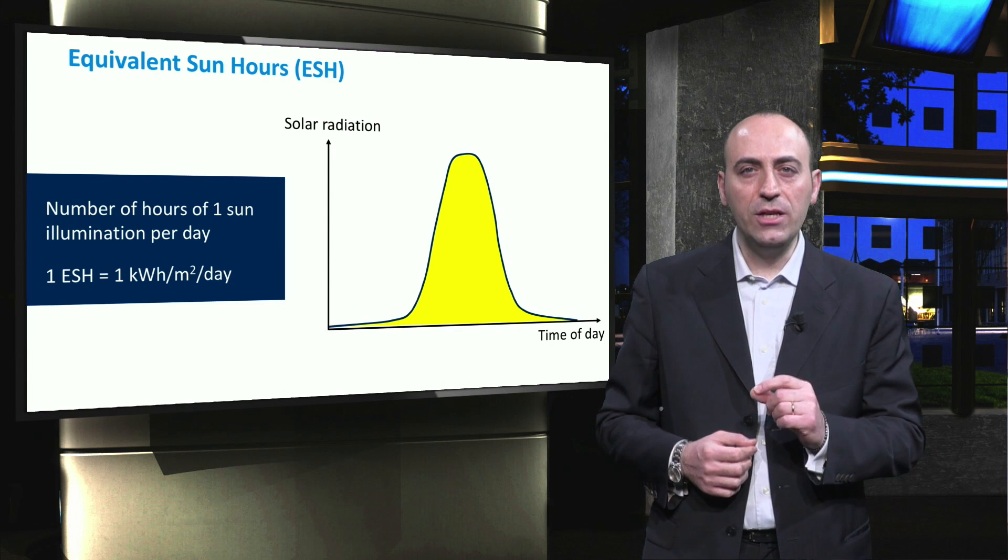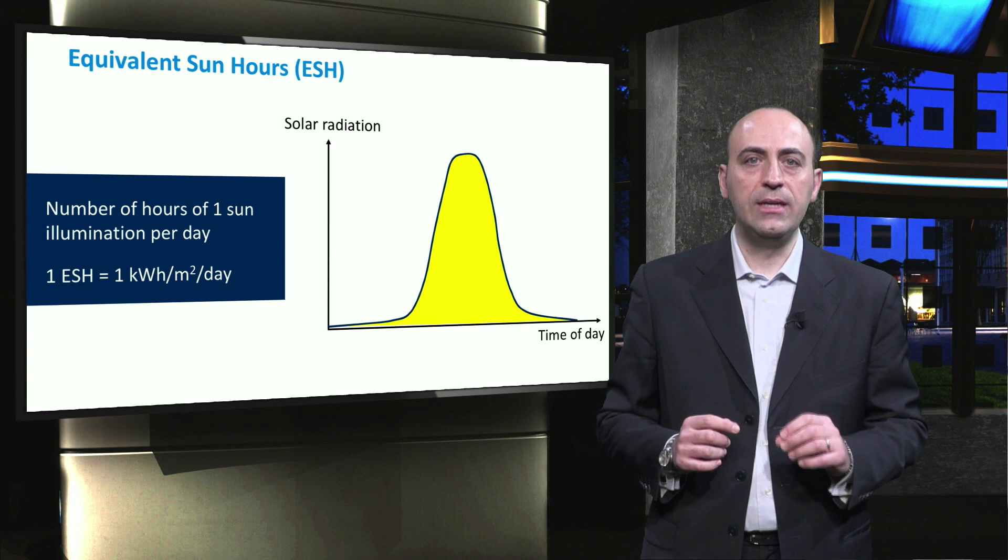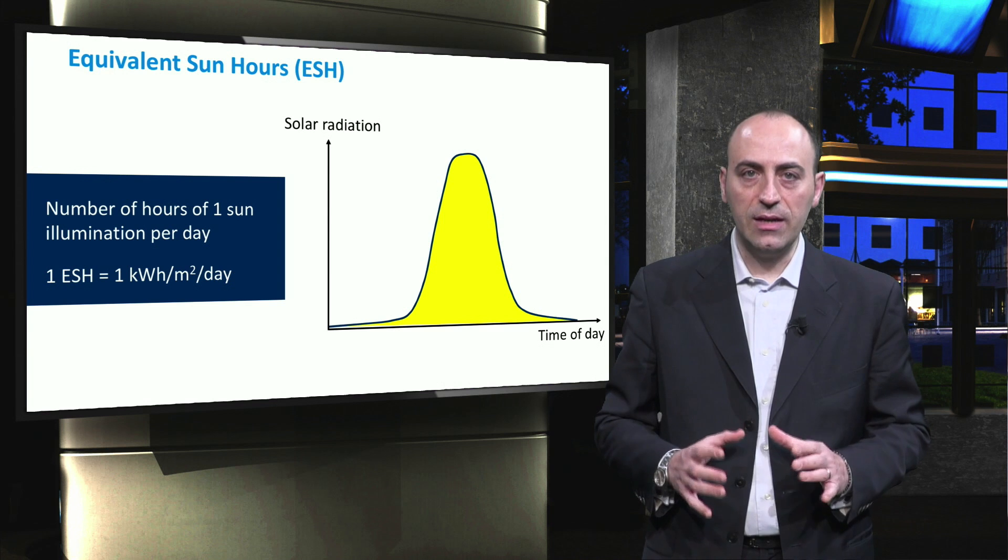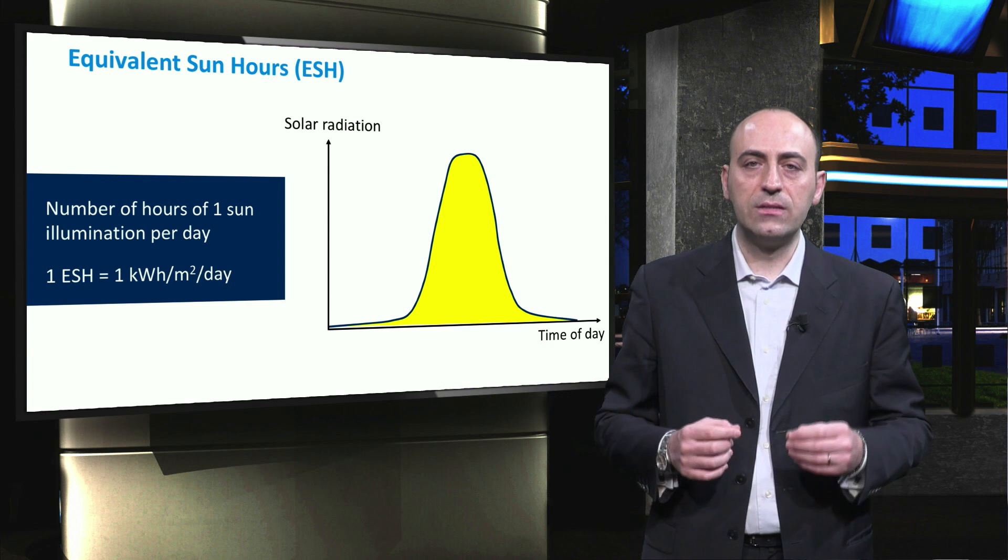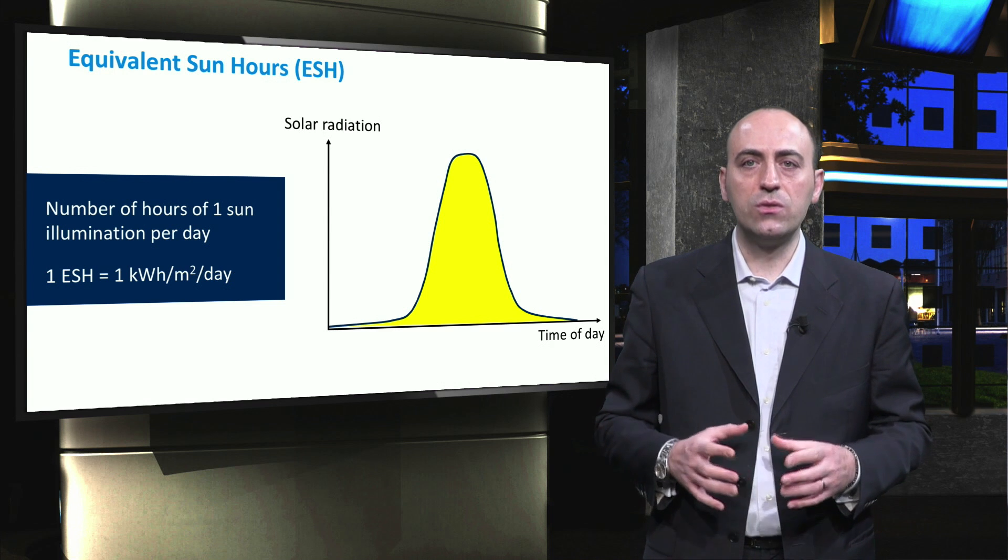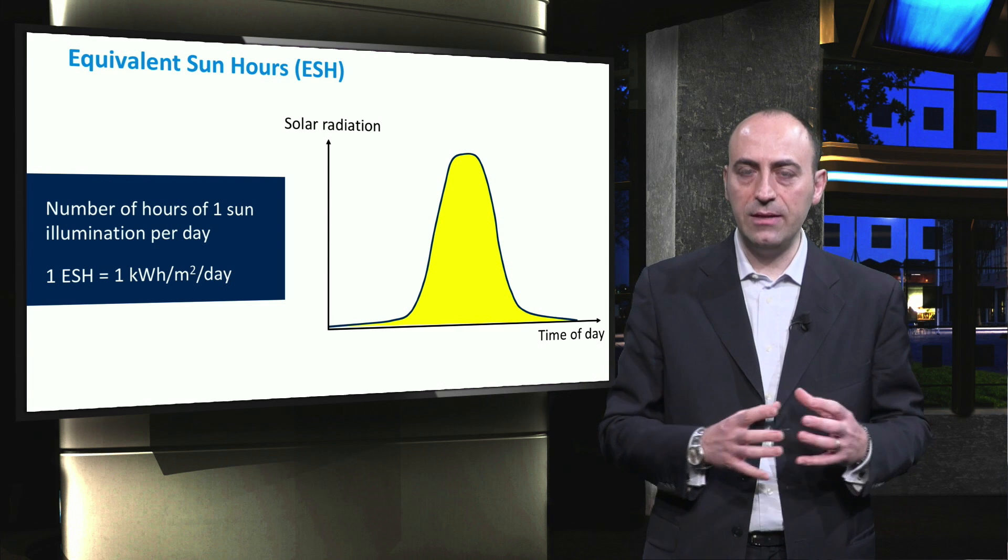One last definition to conclude this lecture. The equivalent sun hours, ESH, also called the peak sun hour. An equivalent sun hour, specifically, is an hour during which the intensity of sunlight is 1000 Watt per square meter. The ESH is used to measure how much solar energy is available in an area during a typical day.